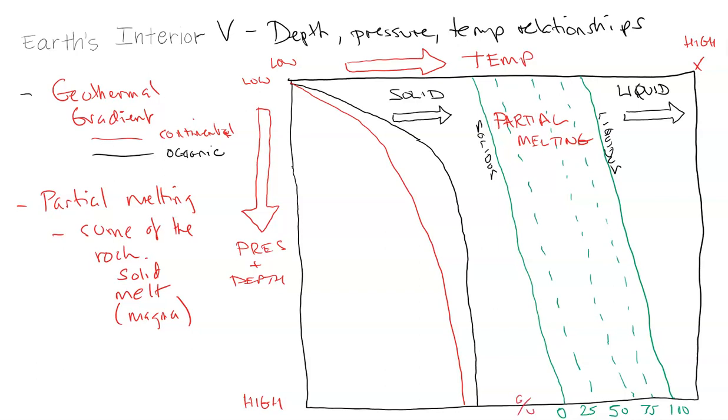This is all percent. This first green line right here would be the limit where anything left of this green line would be all solid rock. As you see, our two geothermal gradients, both the continental and oceanic, both fall within this area of solid rock.